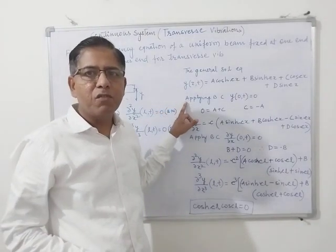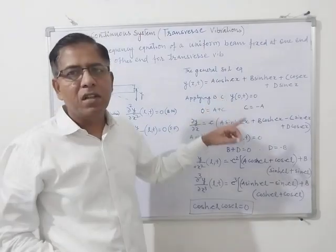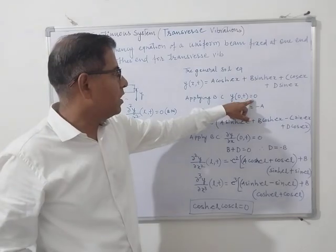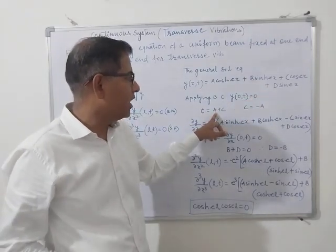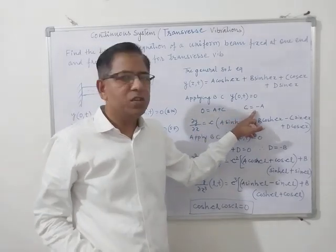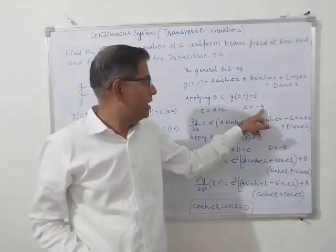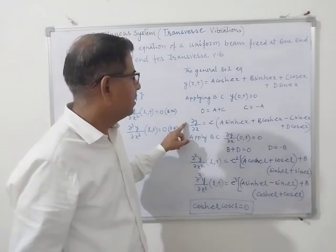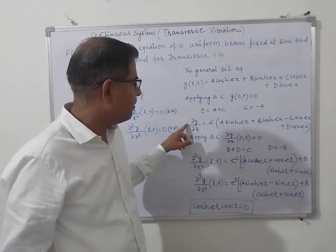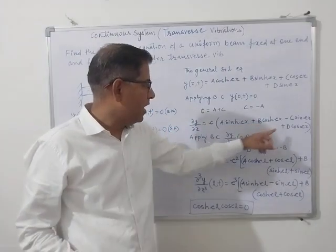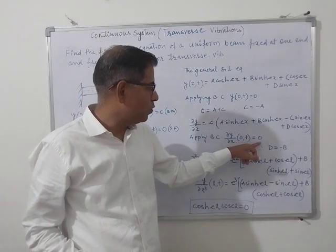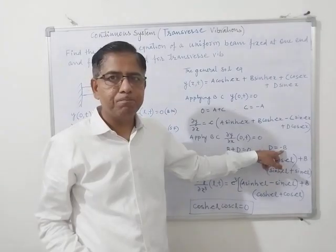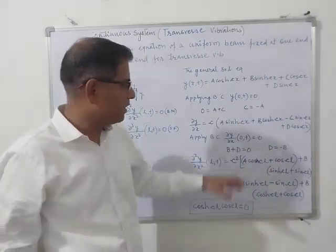First we apply the boundary condition at the fixed end: deflection at x equals zero is zero. Substituting x equals zero into the equation gives A plus C equals zero, meaning C equals minus A. Then applying the second boundary condition, del y by del x equals zero at x equals zero — differentiating the equation and substituting — we obtain B plus D equals zero, that is D equals minus B.